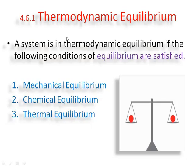The next point is thermodynamic equilibrium. A system is in thermodynamic equilibrium if the following conditions of equilibrium are satisfied. In this chapter, we come across thermal equilibrium, mechanical equilibrium, and chemical equilibrium. These are the three types of thermodynamic equilibrium, and we will discuss each one by one.